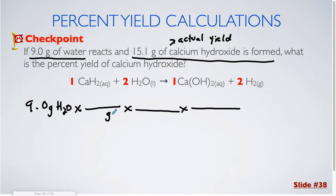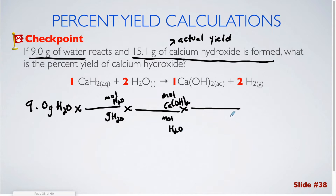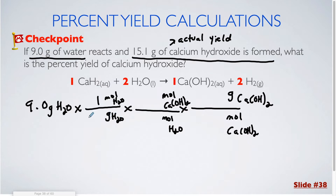I'm going to cancel out grams of water on my way to moles of water. In the middle section, I'm going to cancel out moles of substance A, which is water, to moles of substance B. In this problem, we're talking about calcium hydroxide. Then I'm going to cancel out moles of calcium hydroxide on my way to grams of calcium hydroxide. One mole is equal to the molar mass of water, which is 18.02. The mole-to-mole ratio is from the balanced equation — one calcium hydroxide for every two water molecules, so that's one over two.